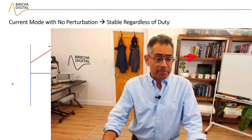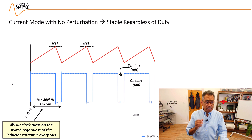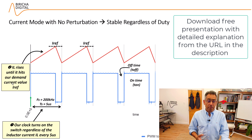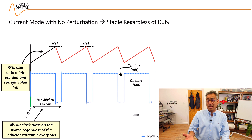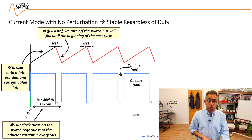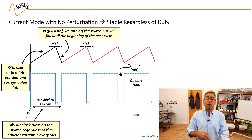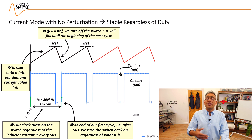Let's show this with the aid of a diagram. Here I have a 200 kilohertz power supply, so my period is five microseconds. At a certain time I turn the switch on, the inductor current rises, it hits the reference value — that's the value that I want — so we turn the switch off, the inductor current falls, and five microseconds later we turn the switch back on, the inductor current rises, hits the reference value, and again we turn off the switch. The process repeats.